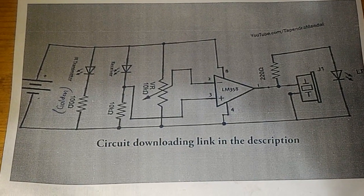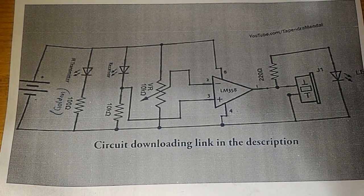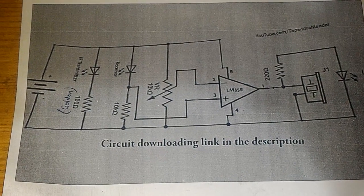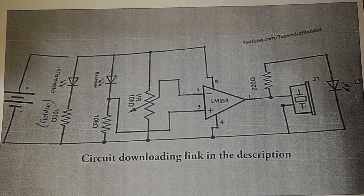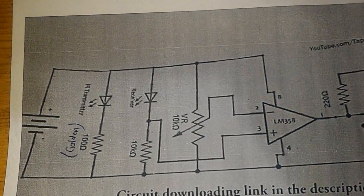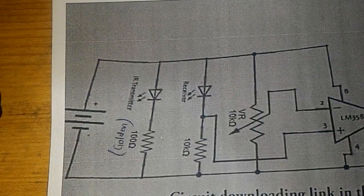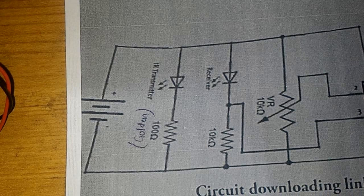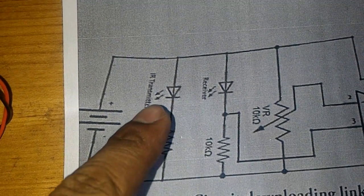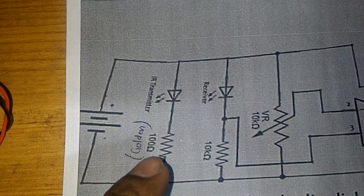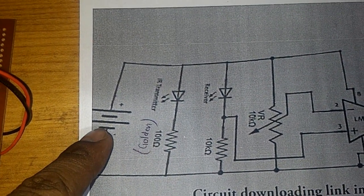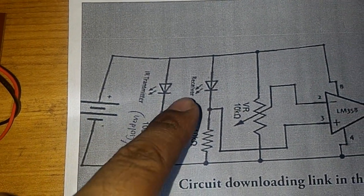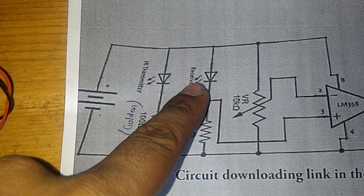Hello YouTube, this is an infrared doorbell circuit diagram. Now you can see here there is an IR transmitter with a resistor, and this is a 9 volts DC supply. And here there is a receiver, an IR receiver with a resistor.